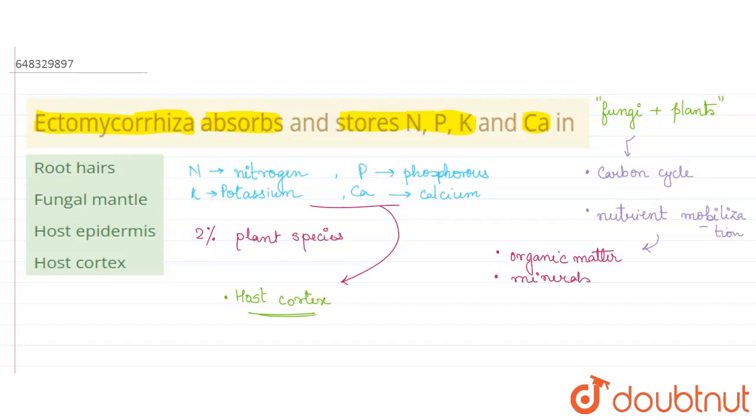If we see the options here, we have root hairs. Root hairs are generally involved in absorption, so this is a wrong option. Next, we have fungal mantle and host epidermis. These two options are also wrong.